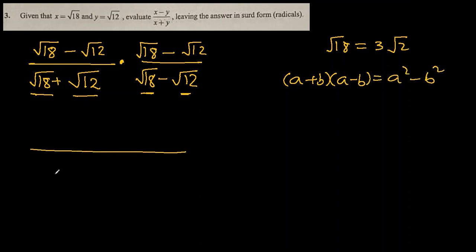So the denominator becomes square root 18 square divided by square root 12 square, and that's why I did not simplify this because square and square root straight away cancel out.